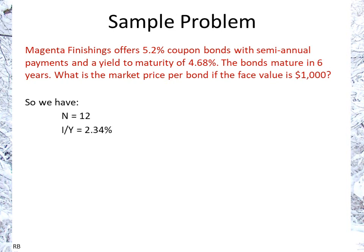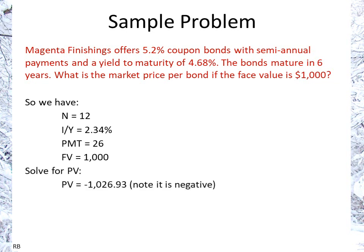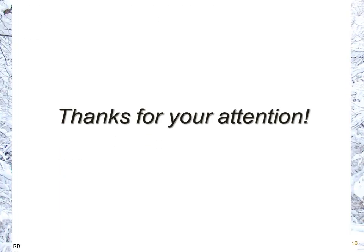The result is −$1,026.93. As noted, the calculator gives a negative value, but that means the price of our bond is $1,026.93. Thanks for your attention, and I hope that helped.